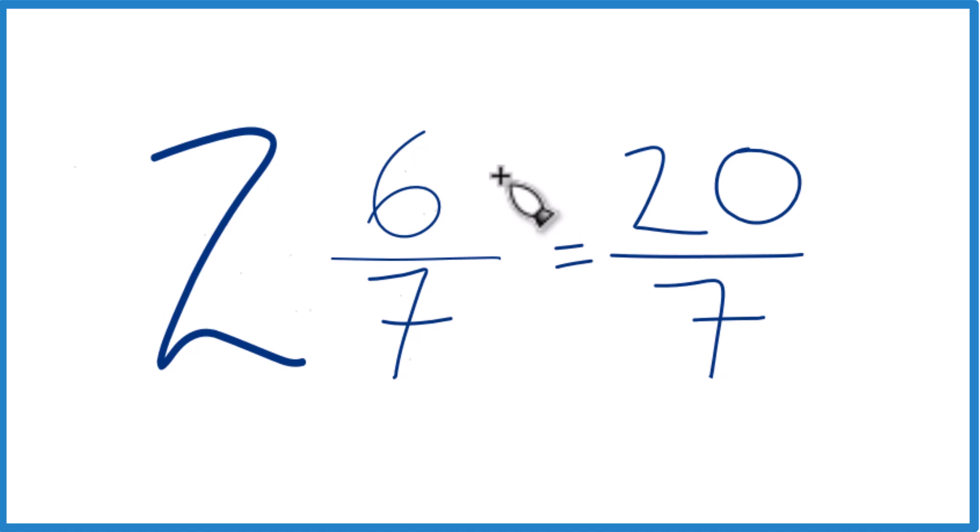Let's do it one more time. 2 times 7 is 14. 14 plus 6, that gives us 20. Then we just bring the 7 across, and we have our improper fraction.